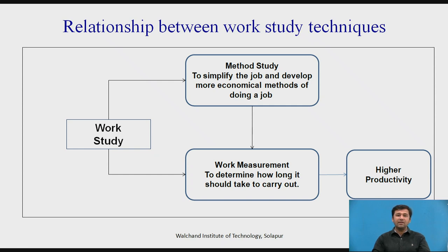The second part of method study involves recording techniques, where various charts and symbols are used. Different charts and symbols represent different activities. This provides a framework where visualization can be done by management and the team can come together and decide how work is being performed. Different types of charts — travel charts, string diagrams, flow charts, and man-machine charts — can be examined simultaneously.